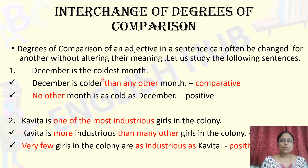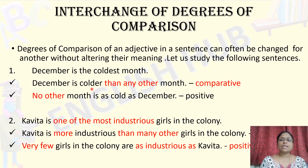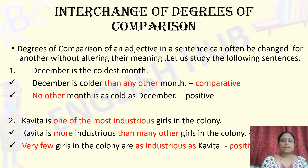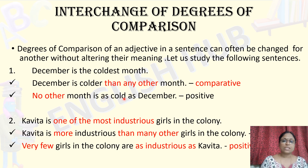The keyword here is 'colder' — 'coldest.' The suffix -est is added to the adjective 'cold,' making it superlative. The suffix -er is added to get the comparative form 'colder,' followed by 'any other.' For the positive degree, it begins with 'no other': No other month is as cold as December.